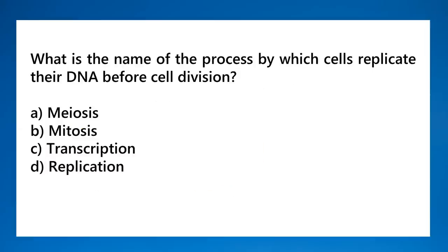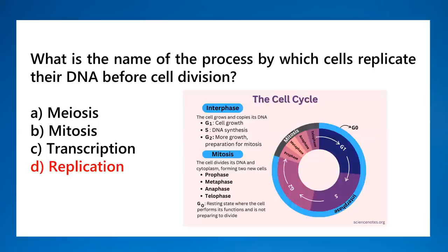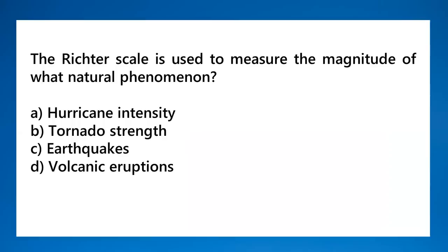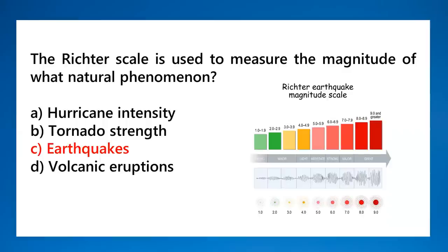What is the name of the process by which cells replicate their DNA before cell division? That is replication — DNA replication occurs during the S phase of the cell cycle. Remember the cell cycle: G1, then S phase (DNA replication), then G2, followed by mitosis (PMAT). Interphase, also known as G0, is the process before mitosis. The Richter scale measures the magnitude of earthquakes.